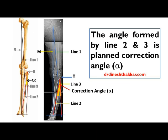The angle formed by Line 2 and Line 3 is our correction angle alpha for the open wedge high tibial osteotomy.